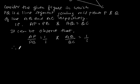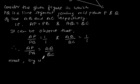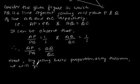Therefore, AP by PB is equal to AQ by QC. Hence, by using the basic proportionality theorem, we will get PQ parallel to BC. Hence proved.